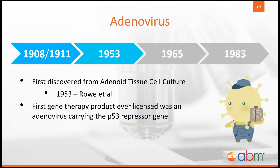The next studied vector was the adenovirus, which was discovered in 1953 from adenoid tissue cell cultures, which gave its name. It is interesting to note that the first developed gene therapy product was an adenovirus carrying the P53 repressor gene. P53 is frequently inactivated in about 50% of all human cancers, and so the restoration of normal function was a large step in demonstrating the power of viral vectors.